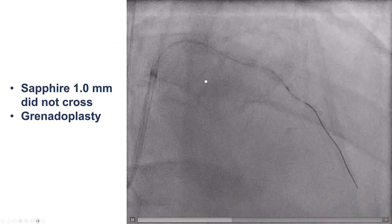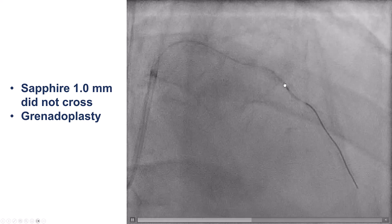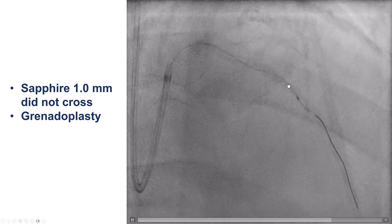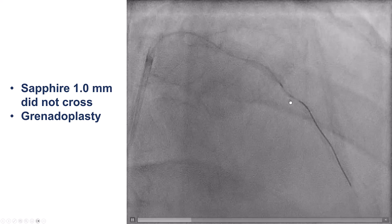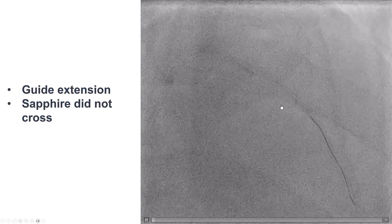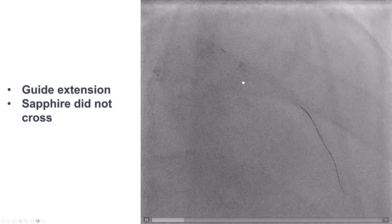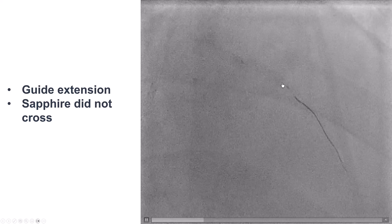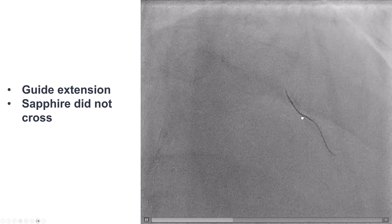In this case, we tried with a small balloon — a Sapphire 1.0, which is the smallest balloon currently available in the U.S. — but it did not cross, and the same happened after modifying the lesion by intentionally rupturing that Sapphire balloon. We did use a guide extension and tried with a new Sapphire, but once again, we were unable to advance much further down the vessel.